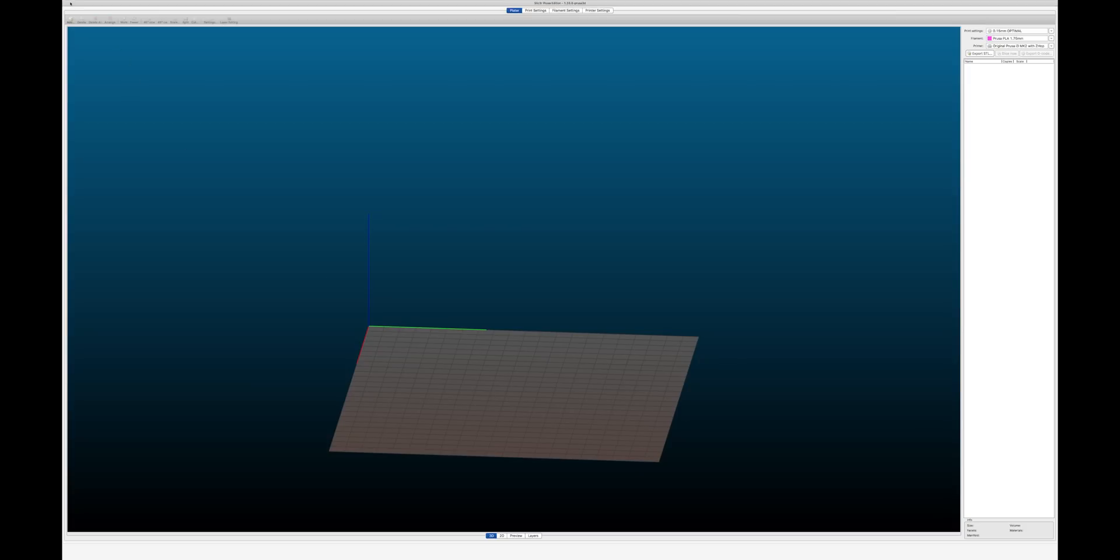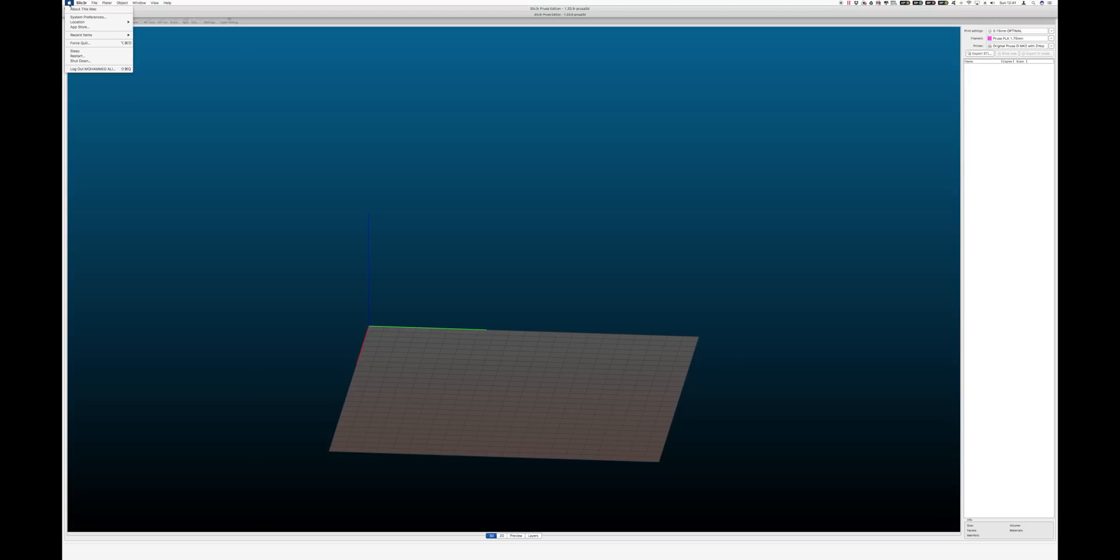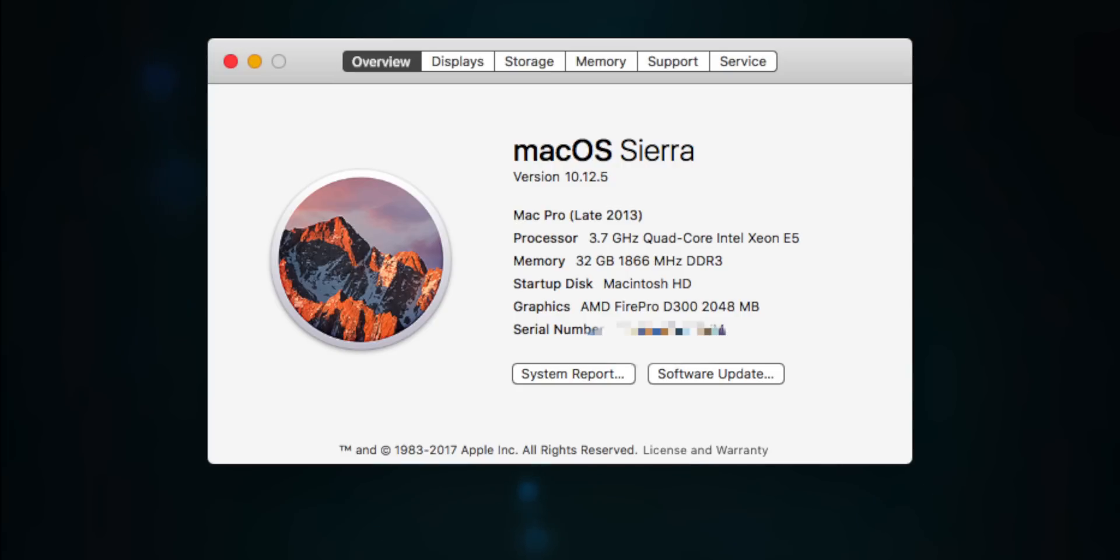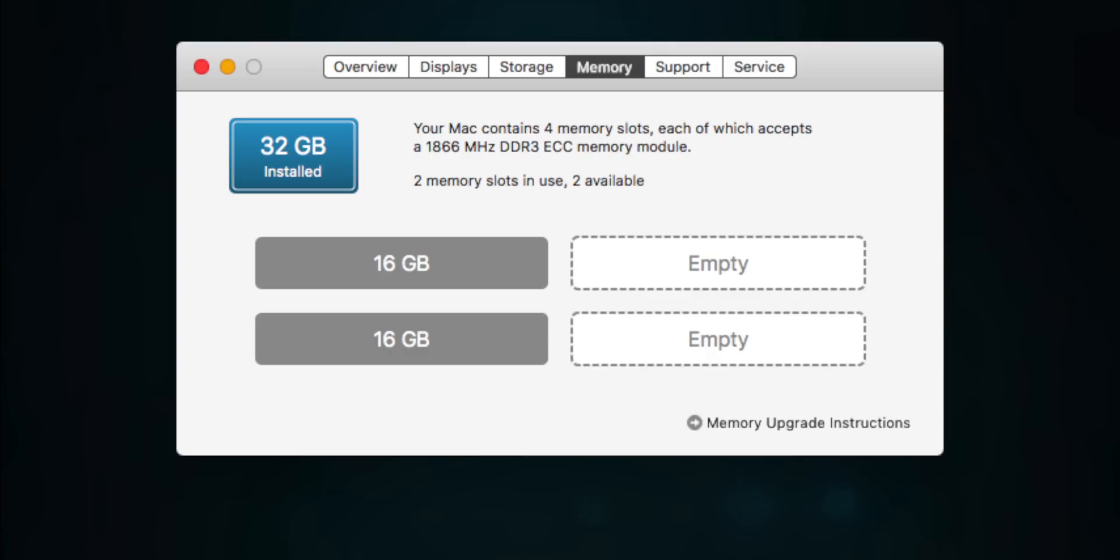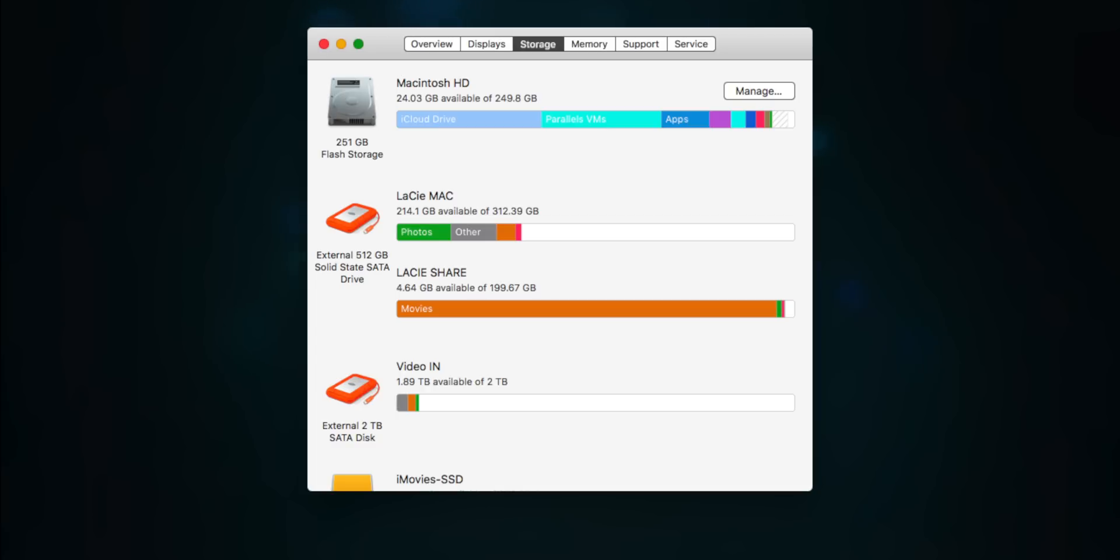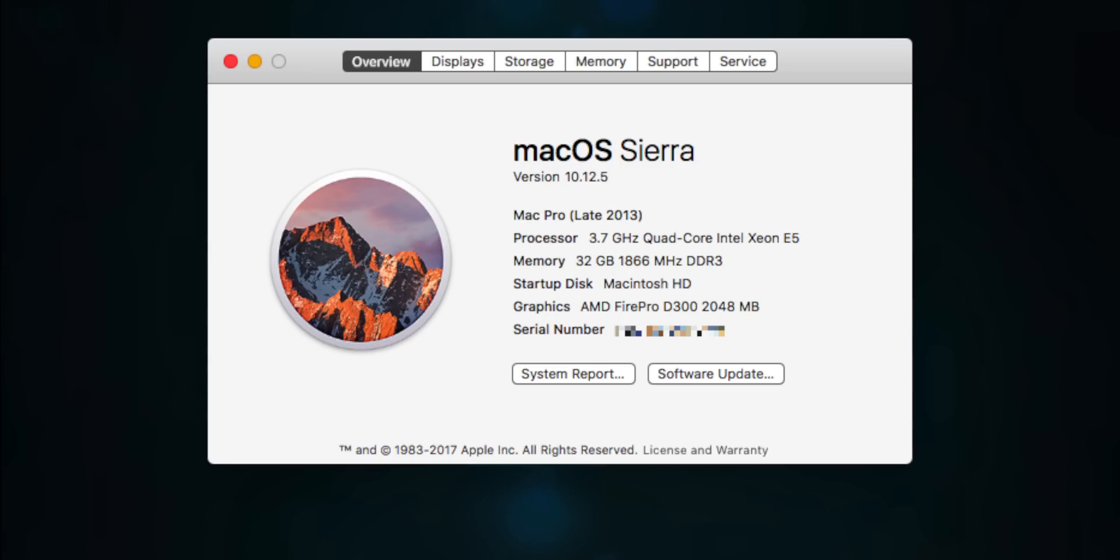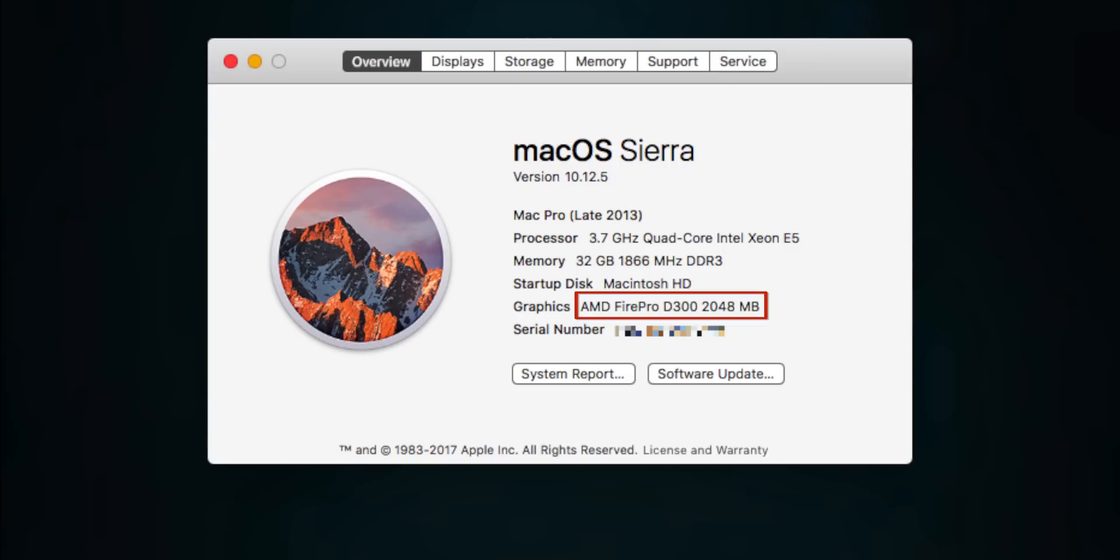Let me share with you the machine specifications for slicing this QSN model. I'll be using Slicer Prusa Edition. I use a Mac Pro. It runs a quad-core at 3.7GHz, and there's 32GB of memory running off two 16GB modules. There's also plenty of SSD hard drives. The only downside is that I'm using an AMD Fire Pro D300 graphics card, which struggles at times, but it does have 2GB of memory. So, without further ado, let's load in the QSN and see how long it takes.